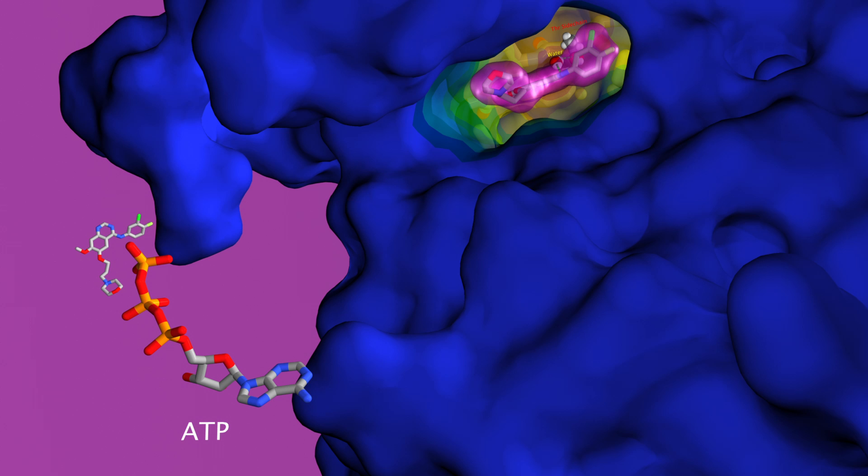The molecular models in this animation are represented in different ways. The large blue figure represents an epidermal growth factor receptor protein with a van der Waals radii surface.